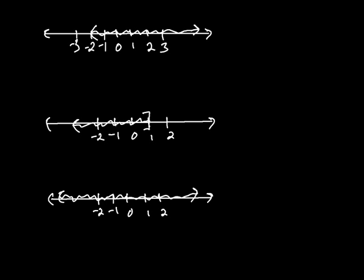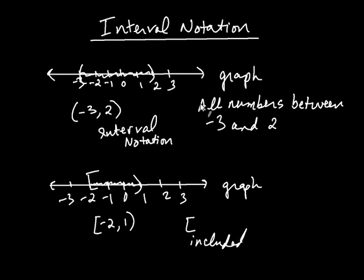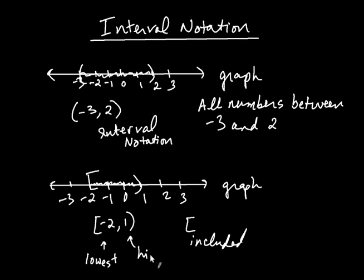Let's go back to the previous example for a moment. Notice that negative 3 is the lowest number and 2 is the highest number. So the number on the left is always the lowest in interval notation, and the number on the right is always the highest — always.